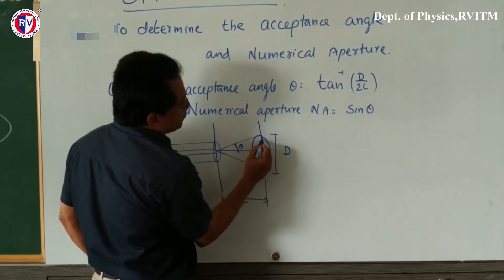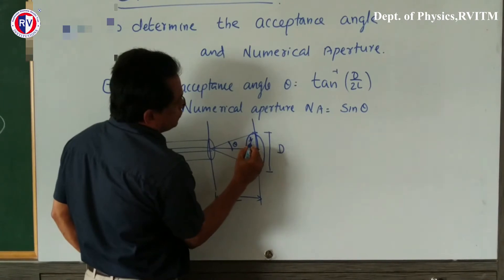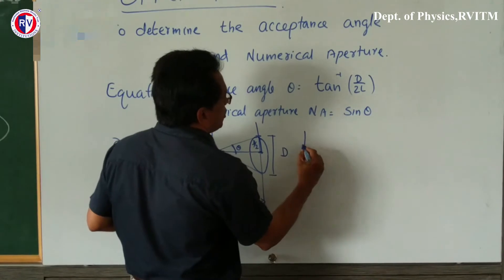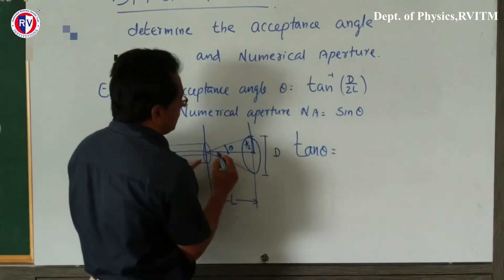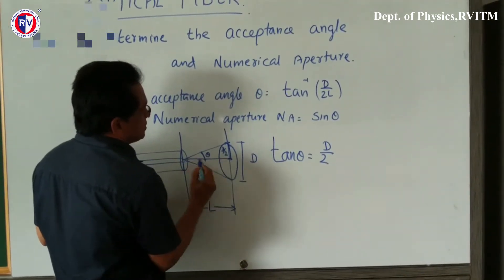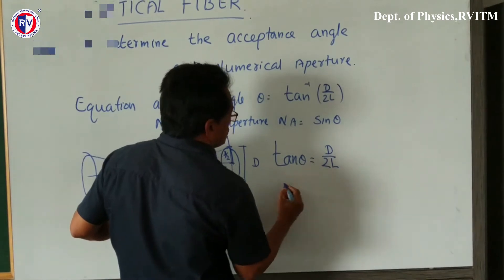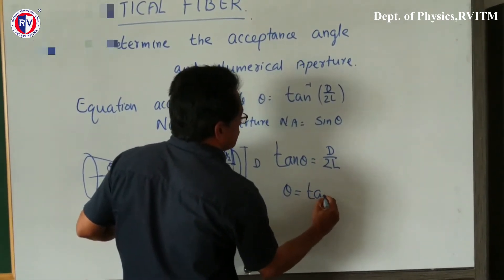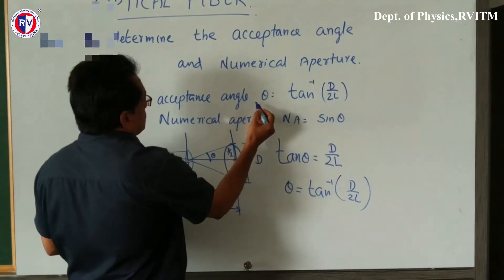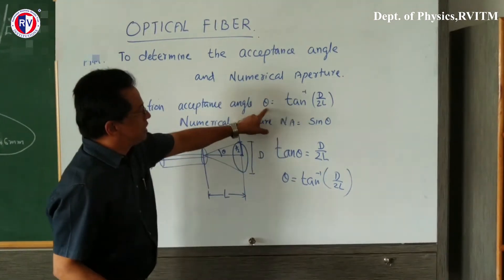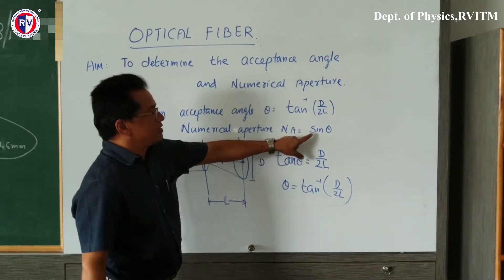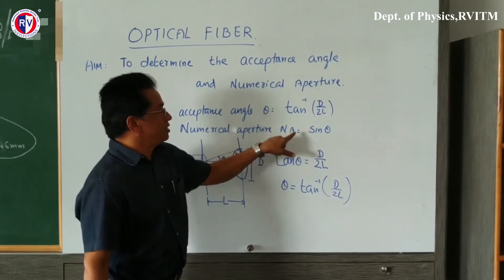From the right angle triangle, this distance is D by 2. So tan of theta equals the opposite side, D by 2, divided by the adjacent side, L. Therefore theta equals tan inverse of D by 2L. The acceptance angle theta is tan inverse of D by 2L. After finding theta, if you calculate sine of theta, that gives you the numerical aperture.